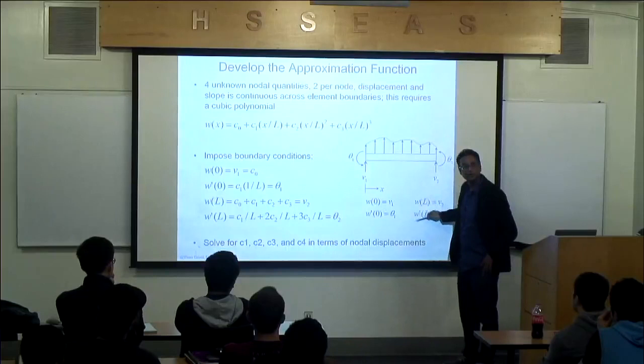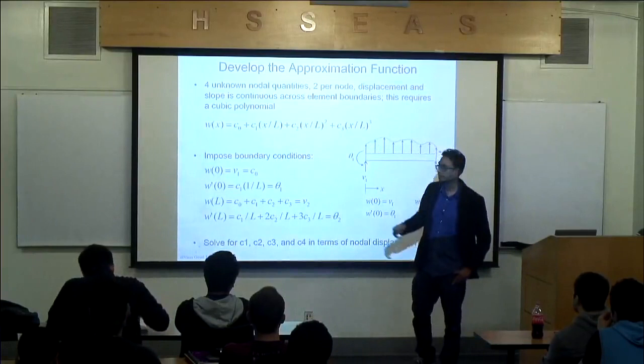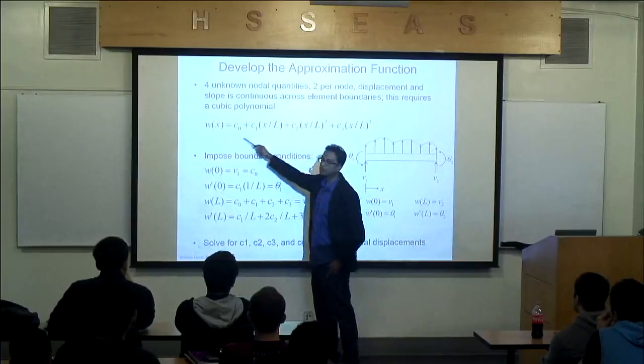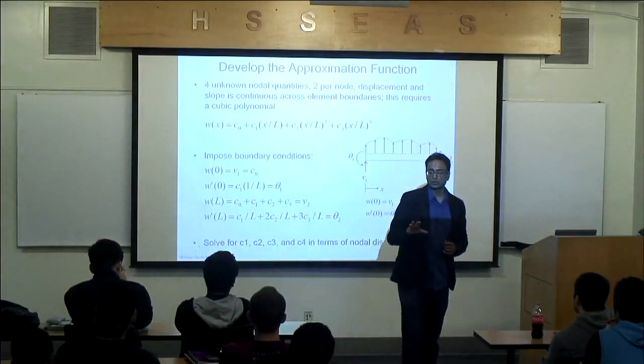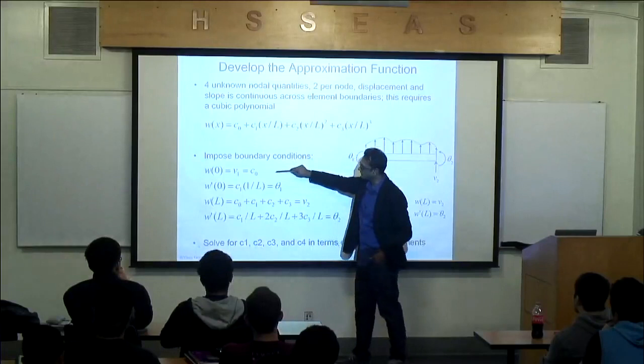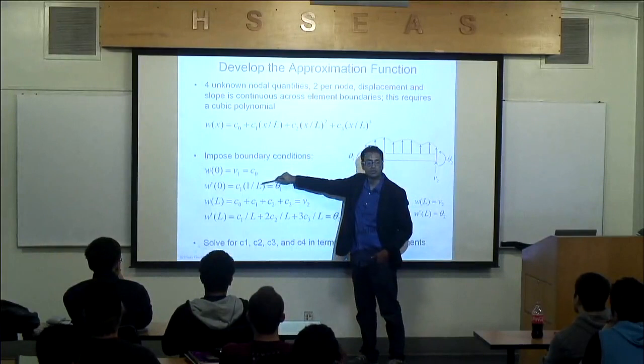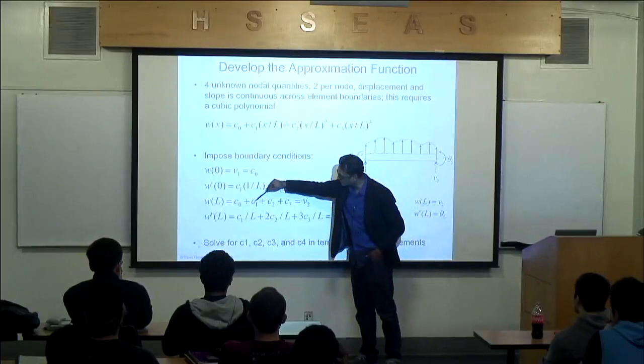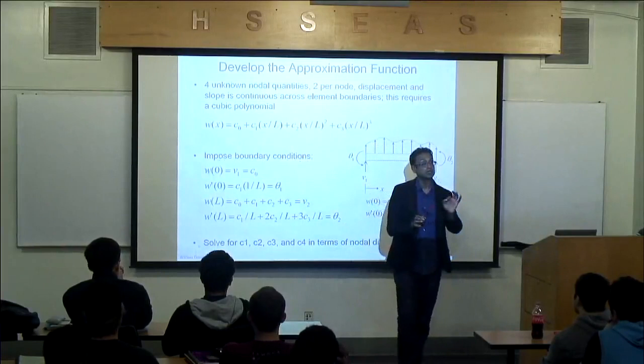This polynomial does not automatically satisfy the essential boundary conditions. If I plug in x = 0, I get C_0, not V1 automatically. So I impose the boundary conditions one by one. I have four unknowns — C0, C1, C2, C3 — and I solve for them, inverting the 4x4 system to express everything in terms of V1, theta1, V2, theta2.